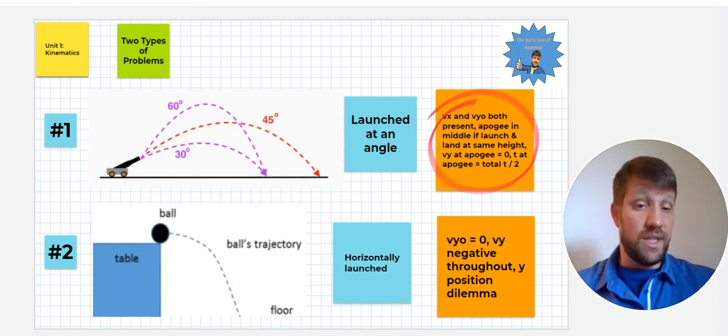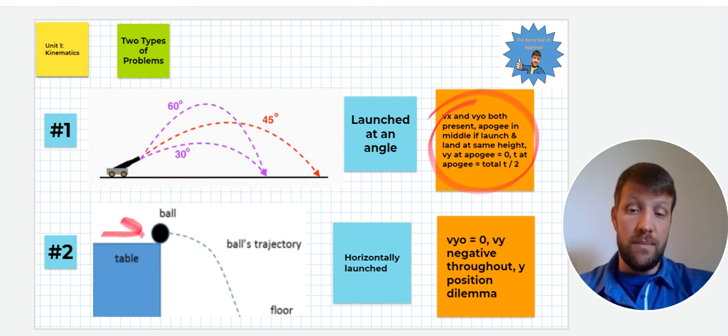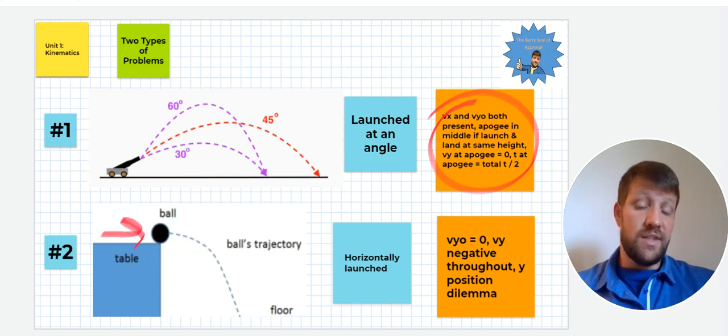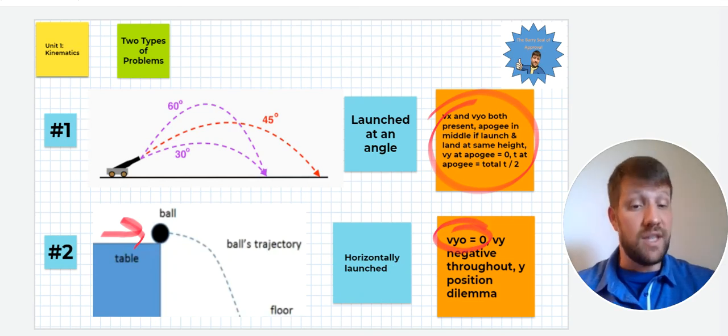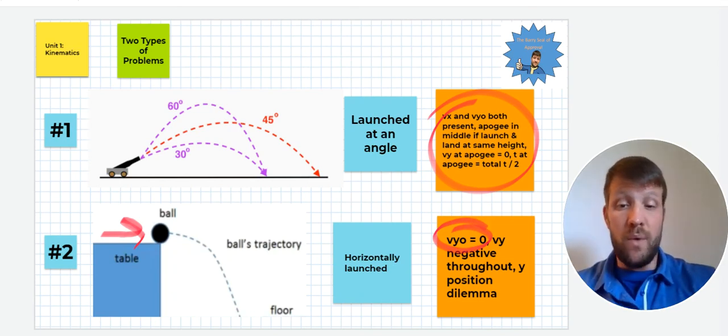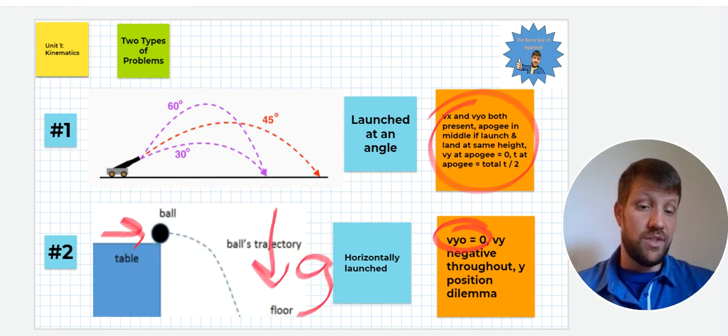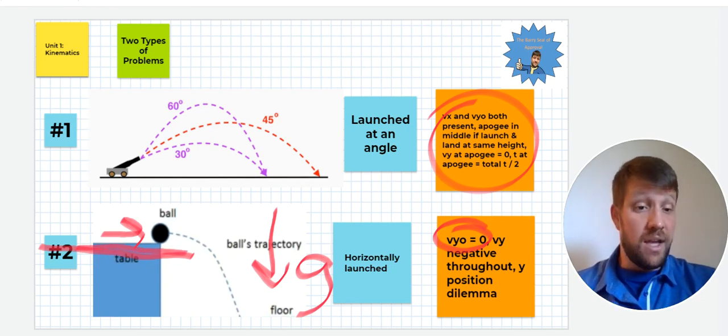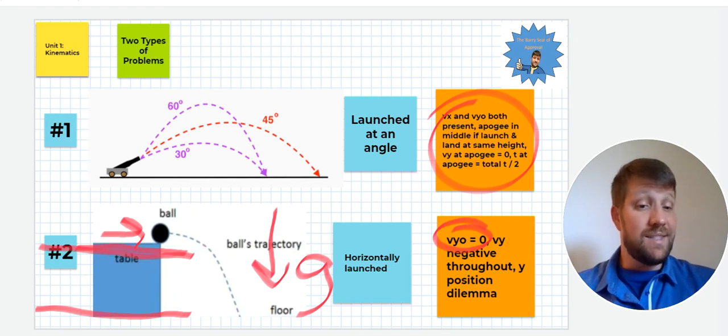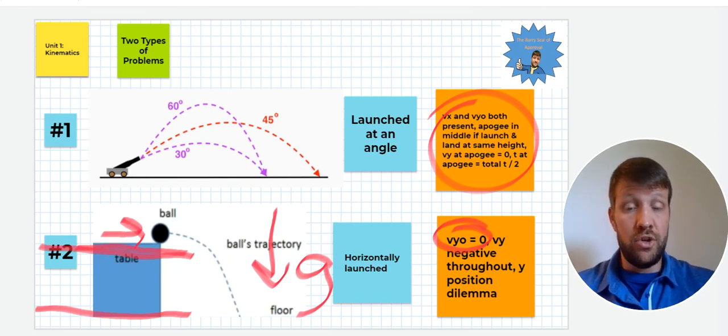The next type of problem will be the horizontally launched problem where you'll see a ball maybe with some initial velocity rolled along a table that falls off the table and thus has some trajectory as it gets to the floor. In this case, because it was only moving horizontally on the table, that initial velocity in the y direction will be zero. It's not moving up and down at all, just left to right. That means that the velocity in the y direction will be negative throughout because gravity is still pulling it downwards at that point. The y position will be what I call a dilemma. You can do one of two things. You can either set this initial spot here along the table as the zero location in the y direction and then it would just fall to a negative position, or you could set the ground here at the bottom as the initial position and then we would just say it starts at a specific height and then falls downwards to zero from there. That can be up to you as you start to solve these problems.